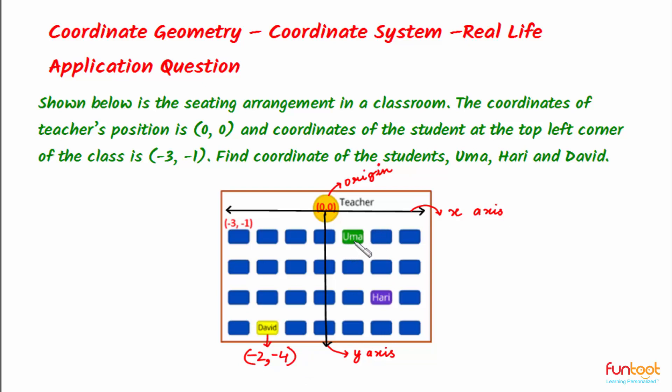Let's now take Uma. Uma is 1 unit towards the right of the Y-axis, so the X-coordinate will be 1, and also it is 1 unit downwards of the X-axis, so the Y-coordinate will be -1.